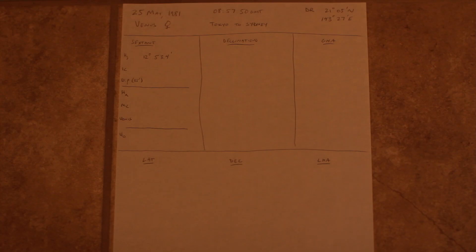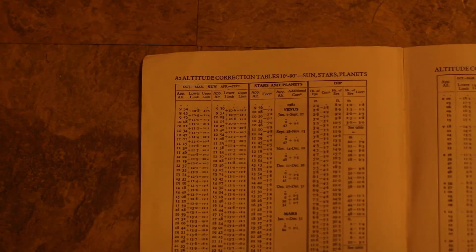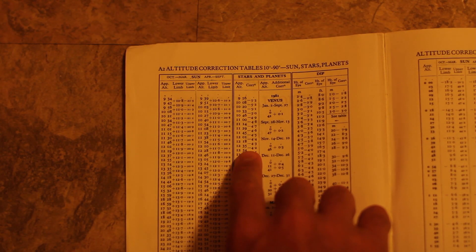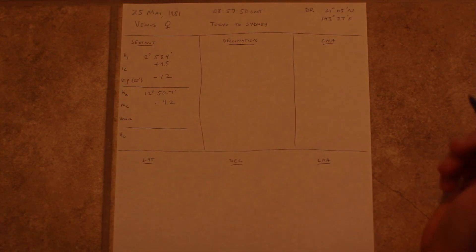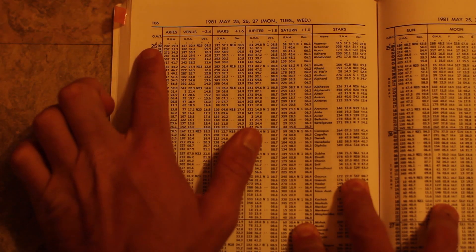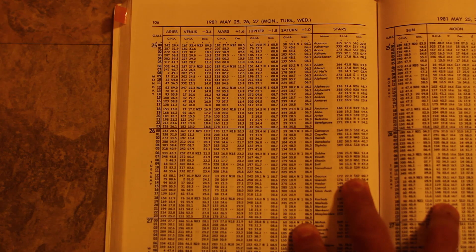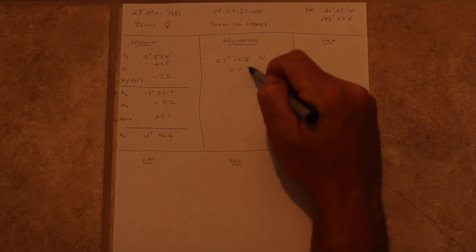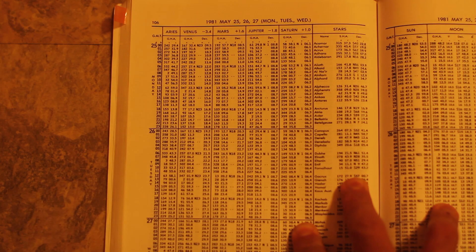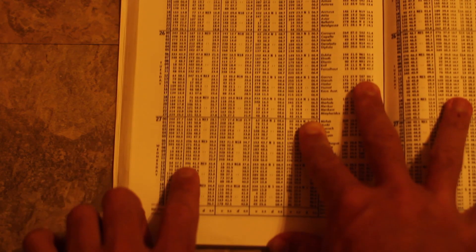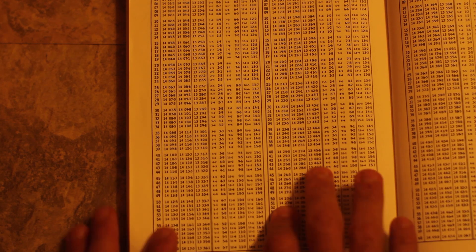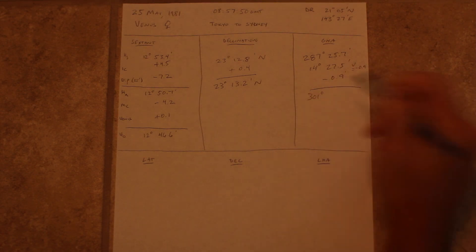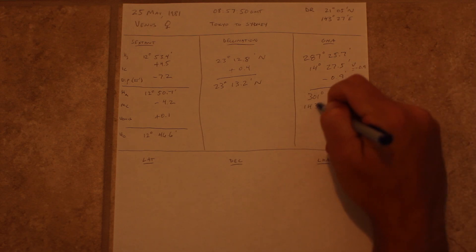Let's work a sight for the planet Venus. Our index correction and dip corrections are pretty standard, and we determine our apparent altitude. We'll use the stars and planets correction for main correction, but note that there's an additional correction for Venus. Venus and Mars sometimes have additional corrections depending on the time of year. Next, we'll calculate the declination of the planet, which is listed on the left pages of the daily pages. We'll note the declination and also the D number at the bottom of the column, which corrects for the rate of change in declination. In the increments and corrections pages at the back of the book, we can find that correction. Now we move on to GHA, which is also listed in the daily pages. There's a V correction at the bottom of the column that accounts for changes in GHA. We'll go to the increments and corrections pages to pull out the correction for minutes and seconds as well as the V correction. From there, it's a standard sight — we'll determine our LHA and move forward.